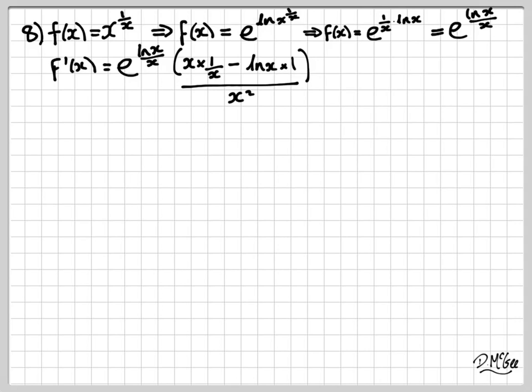So what I've done is I've said covering up the ln x over x in my thumb, so e to my thumb will give me e to my thumb times by the derivative of what I'm hiding with my thumb, in other words, the derivative of ln x over x, for which I have used the quotient rule.